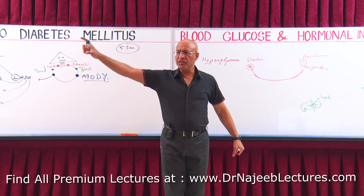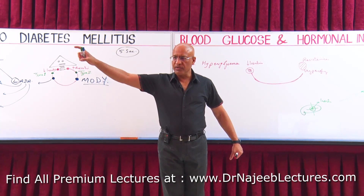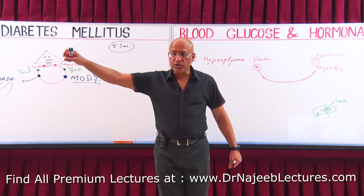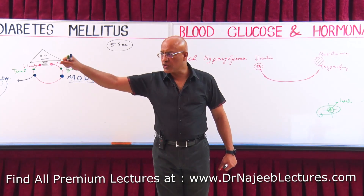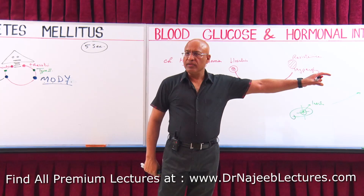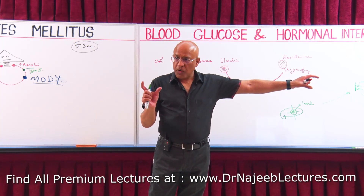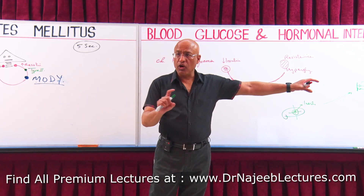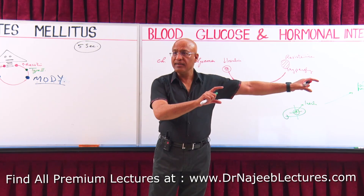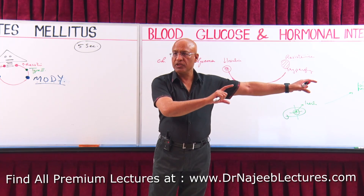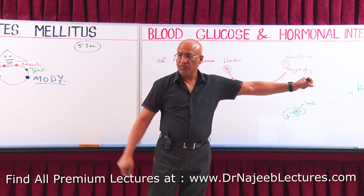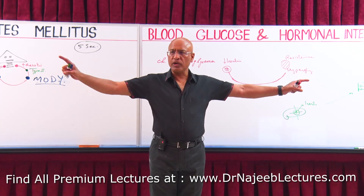One extreme is Type 1 diabetes, where the real problem is severe reduction in production of insulin due to autoimmune destruction of beta cells. The other extreme is Type 2 diabetes, where there is a problem with the action of insulin on peripheral tissues. At least initially insulin is present in the patient's blood, though it may gradually decrease.